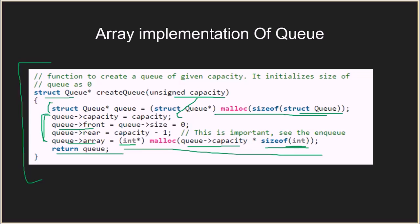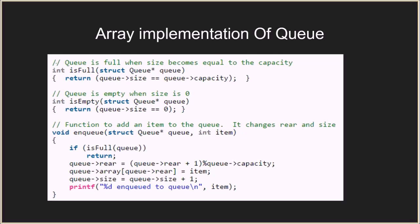Now let's look at two helper functions used in enqueue and dequeue. The isFull function checks if the queue is full — the queue is full when size equals capacity, so it simply checks that condition. The isEmpty function checks if the queue is empty — it compares size with zero; if size equals zero the queue is empty, otherwise it is not.